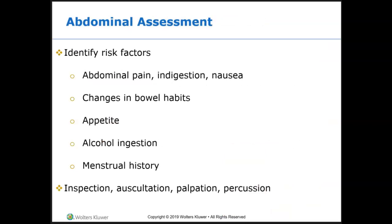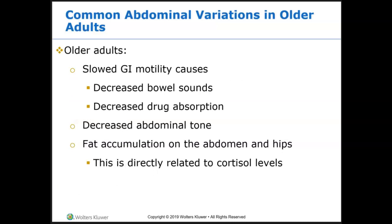Abdominal assessment risk factors include abdominal pain, indigestion, nausea, vomiting, change in bowel habits, appetite, alcohol ingestion, and menstrual history. Common abdominal variations in the older adult: remember, everything slows down as we age. GI motility slows down for digestion, leading to decreased bowel sounds, decreased drug absorption, decreased abdominal tone, and fat accumulation in the abdomen and hips due to increased cortisol levels.